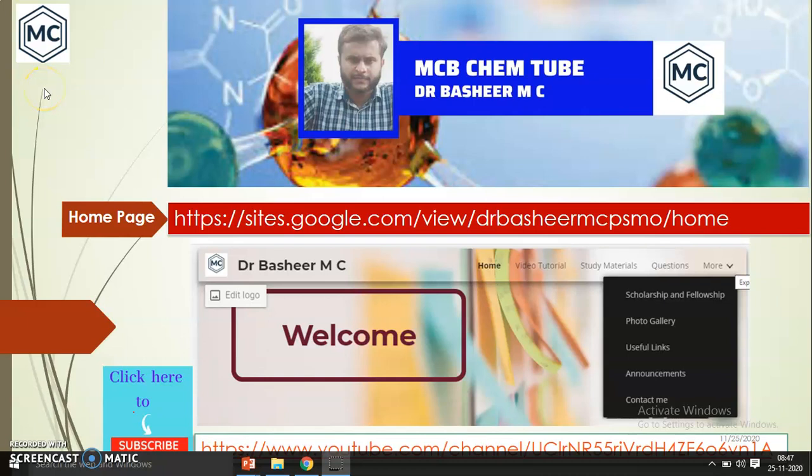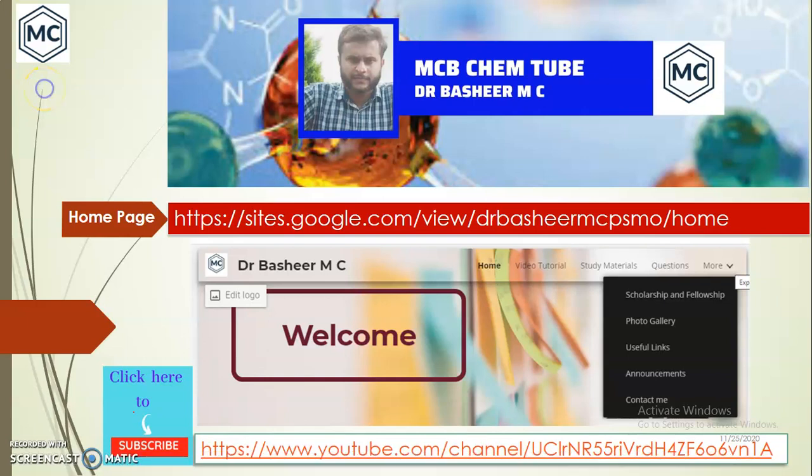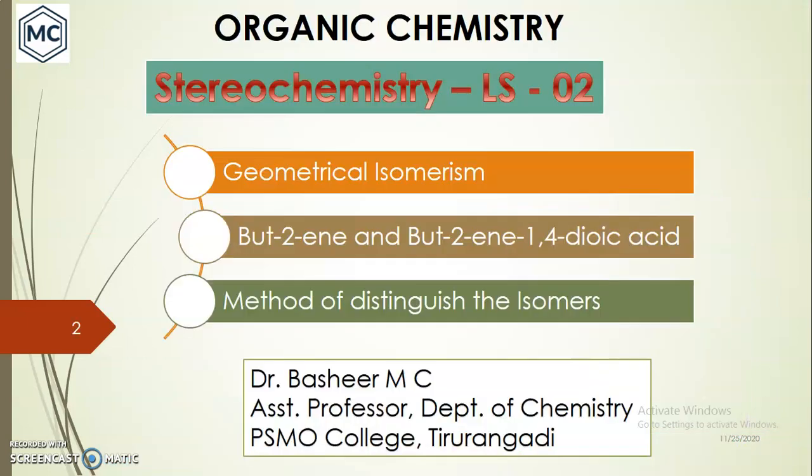Dear friends, welcome back to my YouTube channel. This is an online chemistry tutorial. Get my previous videos from my personal homepage or from my channel. We were discussing the basics of chemistry, and today in this lecture I would like to discuss what is geometrical isomerism — for example in but-2-ene, but-2-ene-1,4-dioic acid, and methods of distinguishing geometrical isomers.